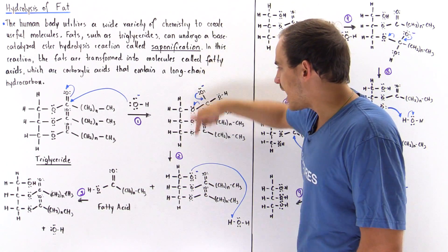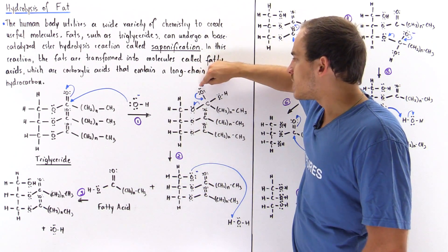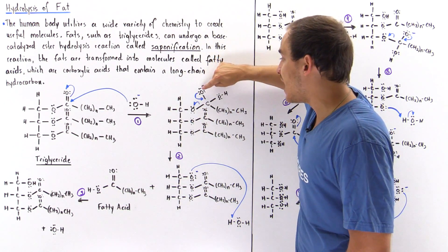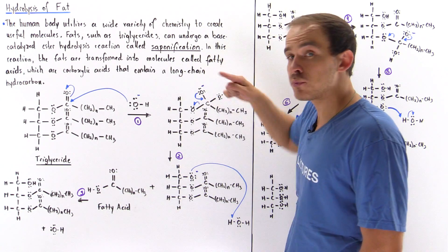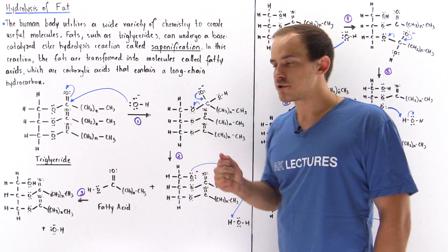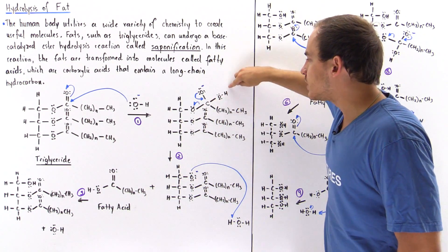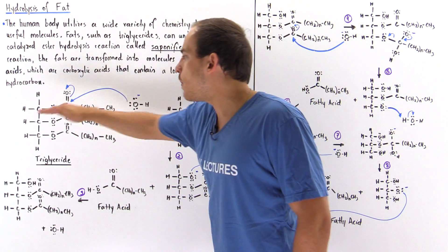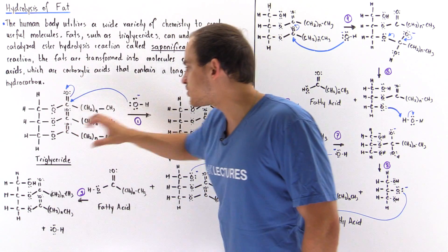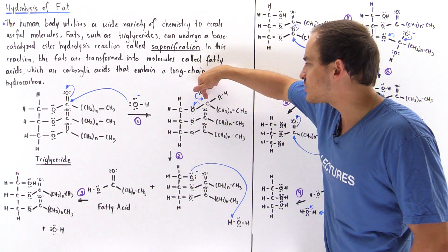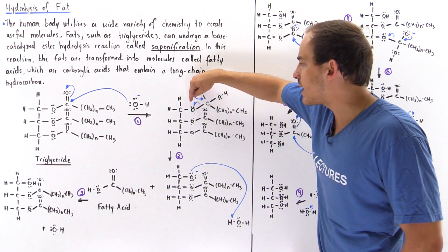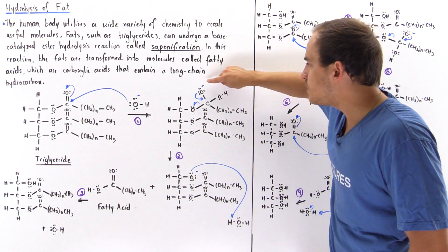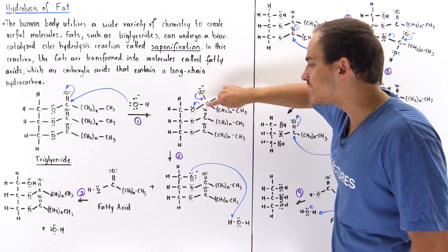In step two, these lone pair electrons can reform the pi bond between oxygen and carbon, and two things can take place. Either the hydroxide acts as a good leaving group — in which case we go back and reform the triglyceride — or when the pi bond is reformed, this bond breaks off, and this entire molecule region breaks off, giving us the carboxylic acid.